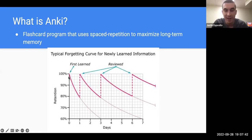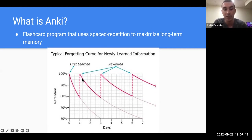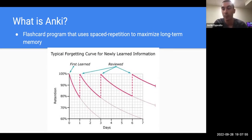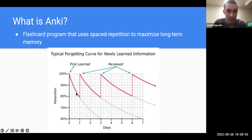This little curve diagram is something that people who use Anki love to show because it's supposed to show that basically any piece of information you learn, you'll forget very quickly unless you see it again or practice it at some point. But the more you practice it, the more time you require before you'll start to forget it again. That's kind of like the whole foundation of Anki.